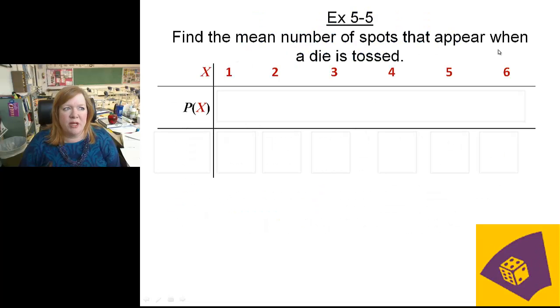Find the mean number of spots that appear when a die is tossed. If you remember, you take the probability times the data value x. So if this is the number of spots on your dice, there's one, two, three, four, five, six for the number of spots.